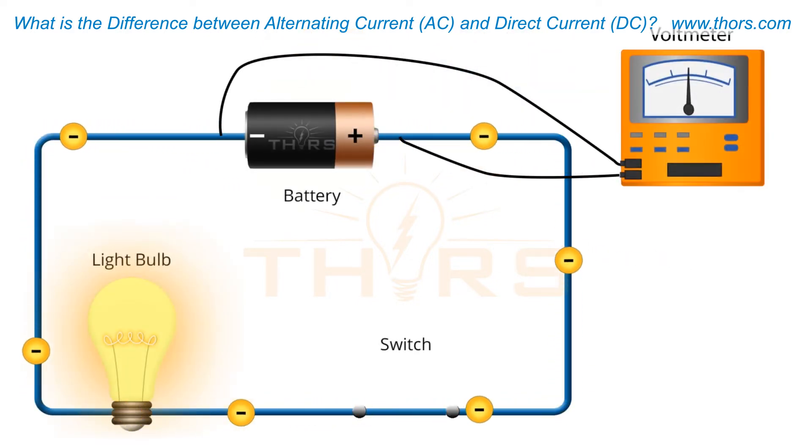Direct current flows in one direction only. A common circuit that utilizes direct current is one with a battery power source.